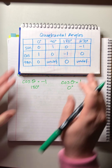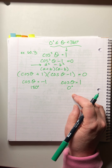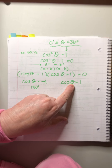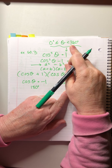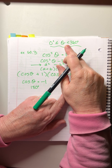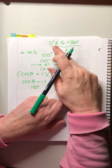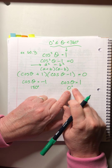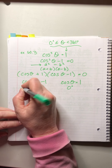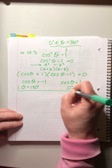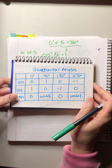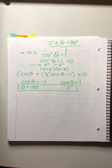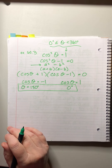Those are the final answers. Remember, cosine of θ is also 1 at 360°, but we don't include 360° because the domain is 0° ≤ θ < 360° — strictly less than 360°. So θ = 0° and θ = 180°. Keep your quadrantal angles handy because they do pop up in some of these problems.